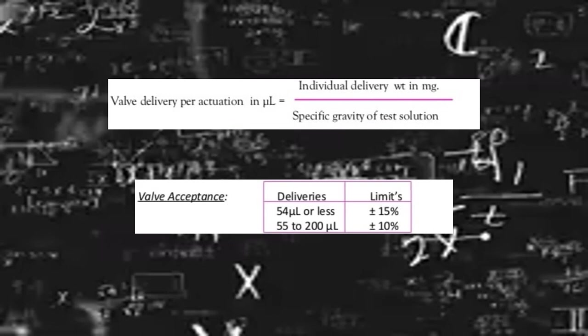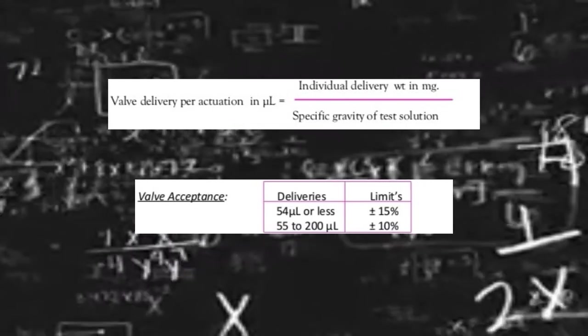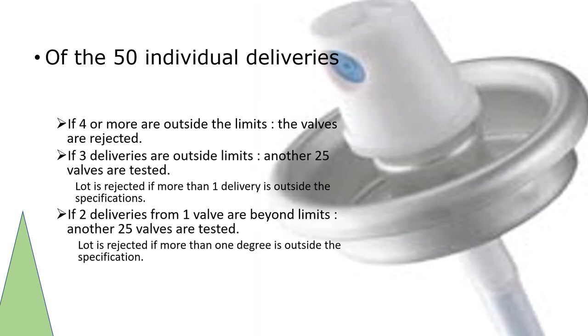Valve delivery per actuation (in µL) is given by individual delivery weight (in mg) divided by specific gravity of test solution. Valve acceptance: valve delivery of 54 µL or less has limits of ±15%; valve delivery of 55 to 200 µL has limits of ±10%. Of 50 individual deliveries, if 4 or more are outside the limits, valves are rejected. If 3 deliveries are outside limits, another 25 valves are tested. The lot is rejected if more than 1 delivery is outside specification.